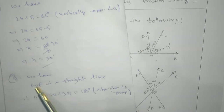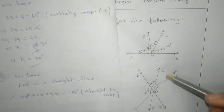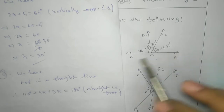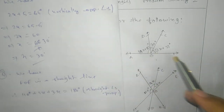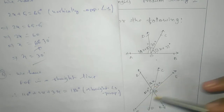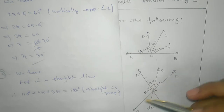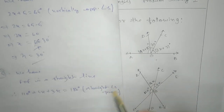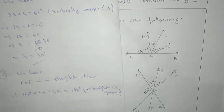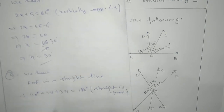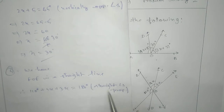Mention the straight angle property here. Now notice: in the first sub-case you have not written FOE, but in the second case you are writing FOE. This is because there are three lines — FOE, AOB, and COD. So if you just write straight angle property, it is not clear which line you are taking. That's why we need to mention that we are taking FOE as the straight line and using straight angle property.